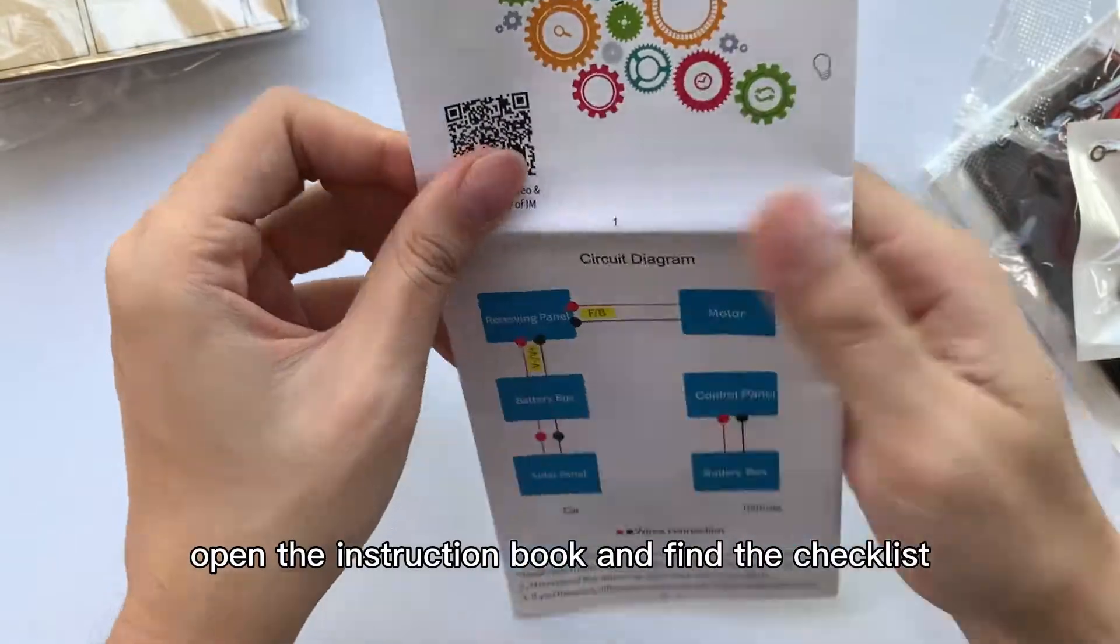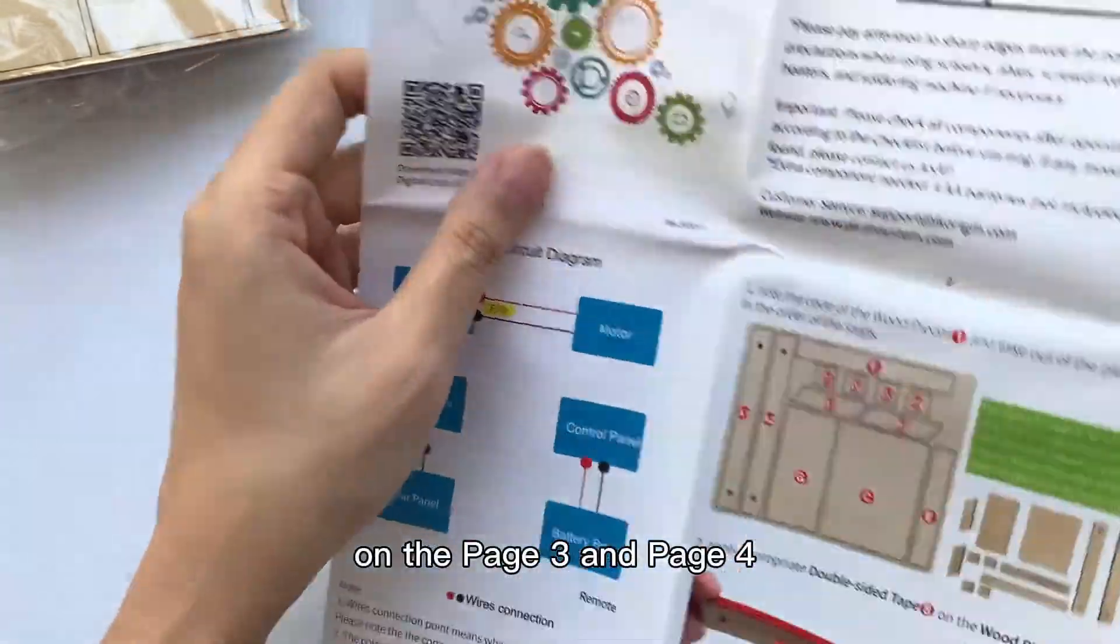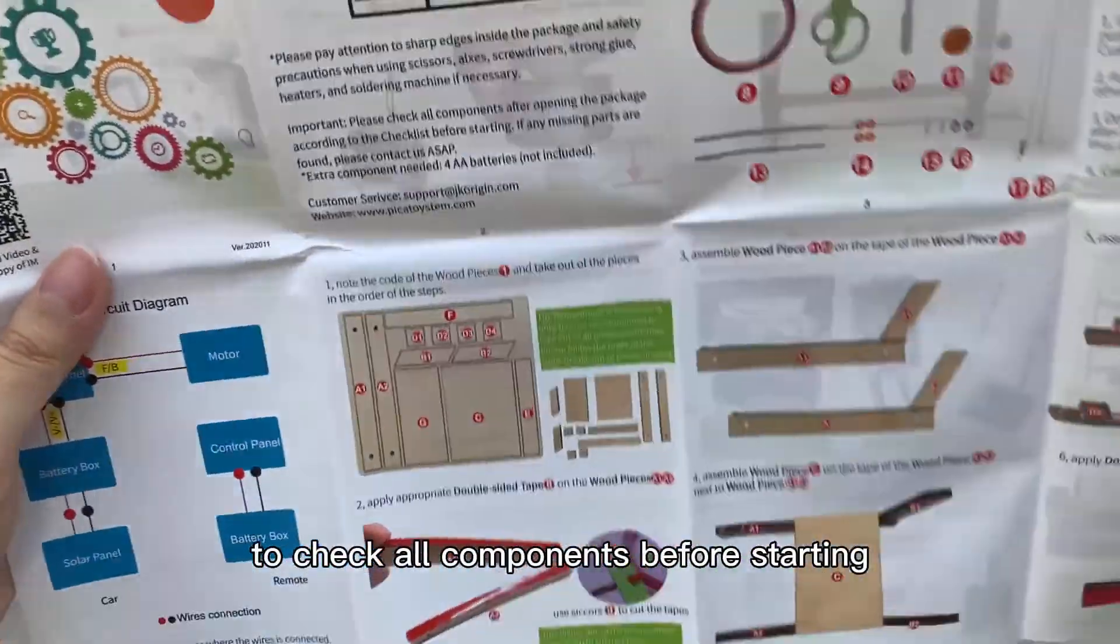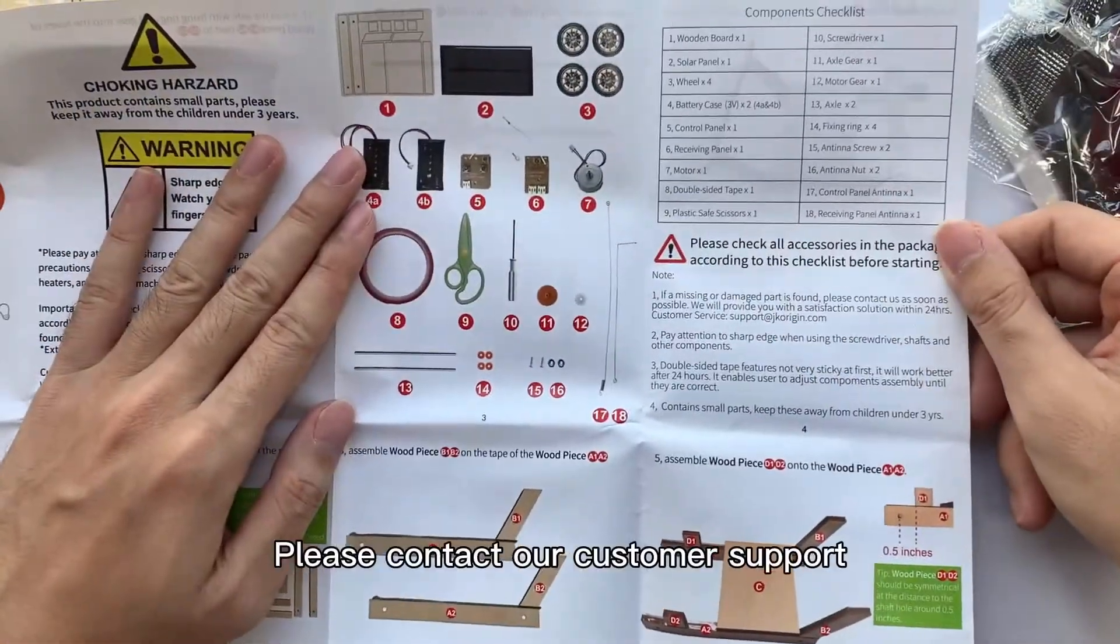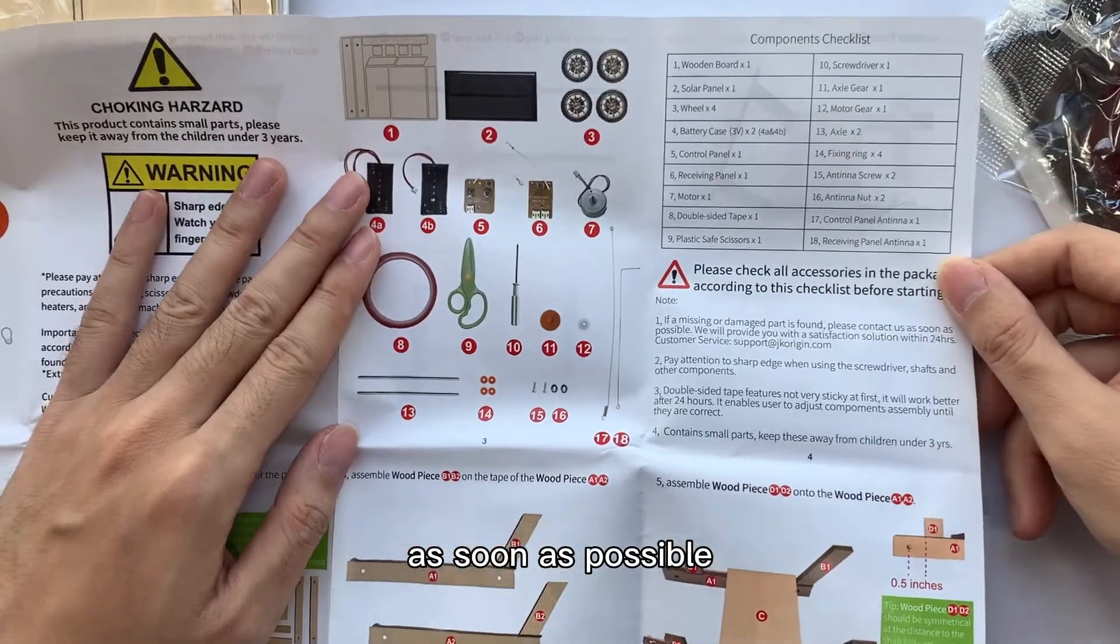You can open the instruction book and find the checklist on page 3 and page 4 to check all components before starting. If you find any missing parts or damaged components, please contact our customer support as soon as possible.